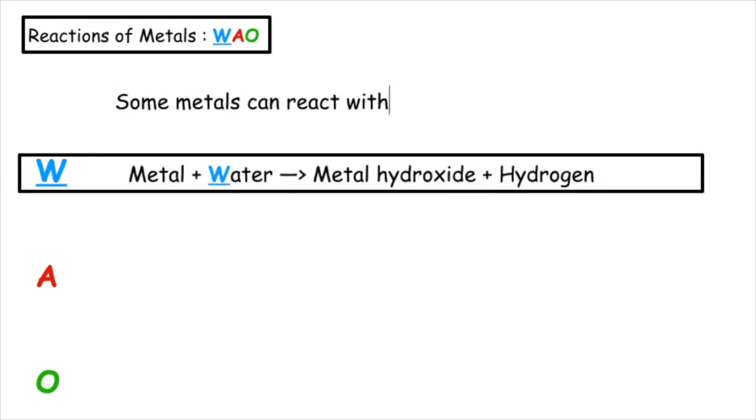Some metals can react with water, acid or oxygen. The word equation for metals reacting with water is metal plus water produces metal hydroxide plus hydrogen gas.